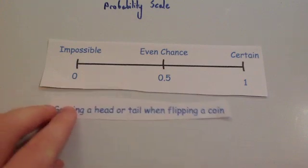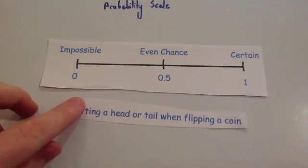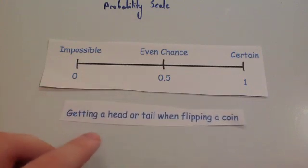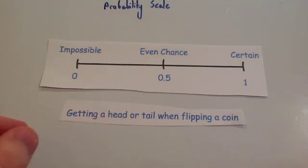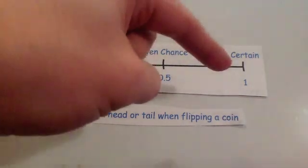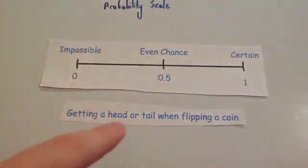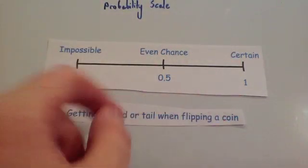If you're asked what is the probability of getting a head or a tail when flipping a coin — well, getting a head or a tail covers both options, so you're going to get one of them. That's certain.